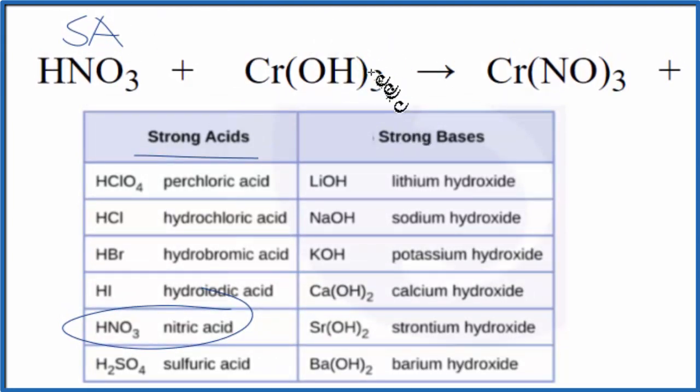Chromium 3 hydroxide, we know it's a base because we have the hydroxide group bonded to the metal, but it's not on our list of strong bases. So this is going to be a weak base.